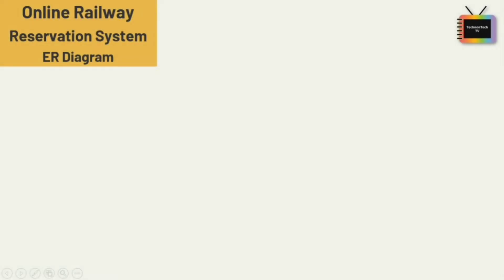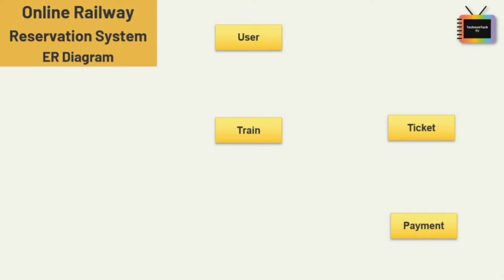Here I am taking only six entities: user, ticket, train, payment, route, and class. The user entity covers both customer and admin — these are the two parties which are allowed to have access to the database of the system and have different view levels of schemas to the database information.